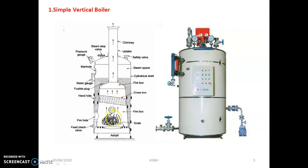The section above the grate is the combustion chamber. In case of the boiler, heat transfer takes place by all three modes. The most important is radiation, which accounts for around 70 to 80% of the heat transfer, followed by convection at 10 to 15%, and conduction at approximately 5%. So radiation is most important in the combustion chamber, where combustion of the fuel takes place.